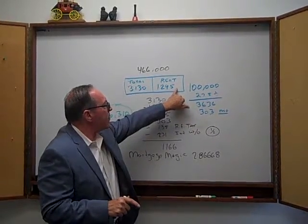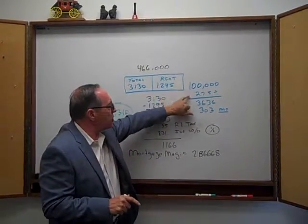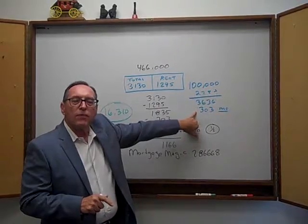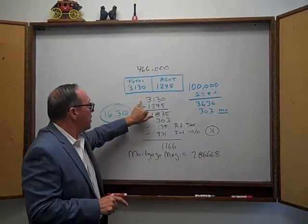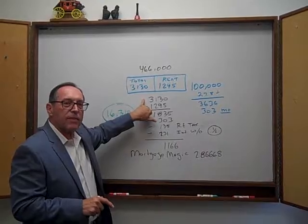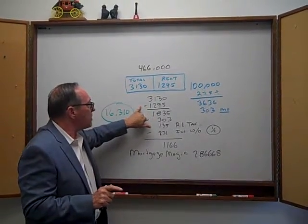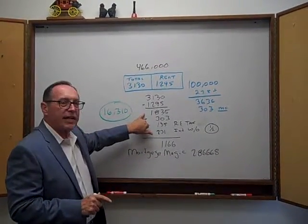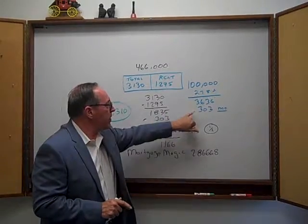Then that means the rental side structure is $100,000. That comes to $303 a month in depreciation. So you've got a $3,030 payment, rent of $1,295, you're down to $1,735. With the $303 depreciation, you're now at $1,432.